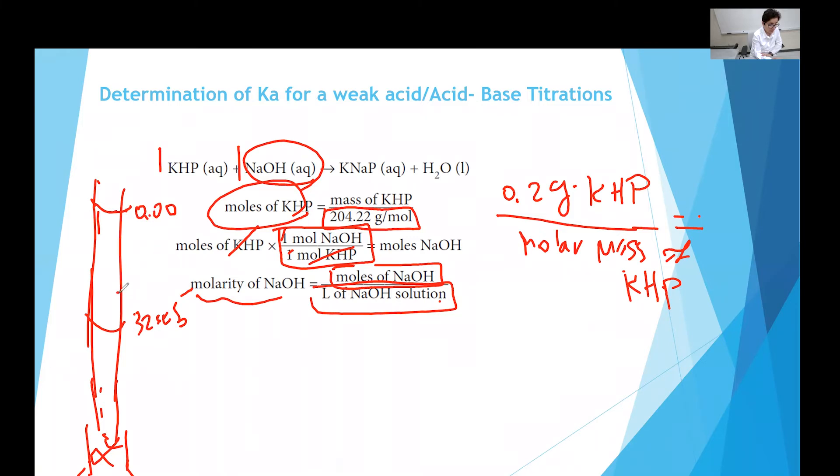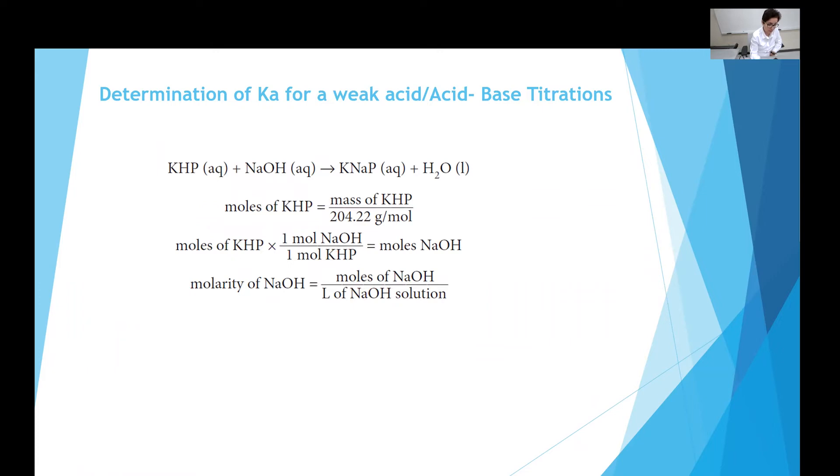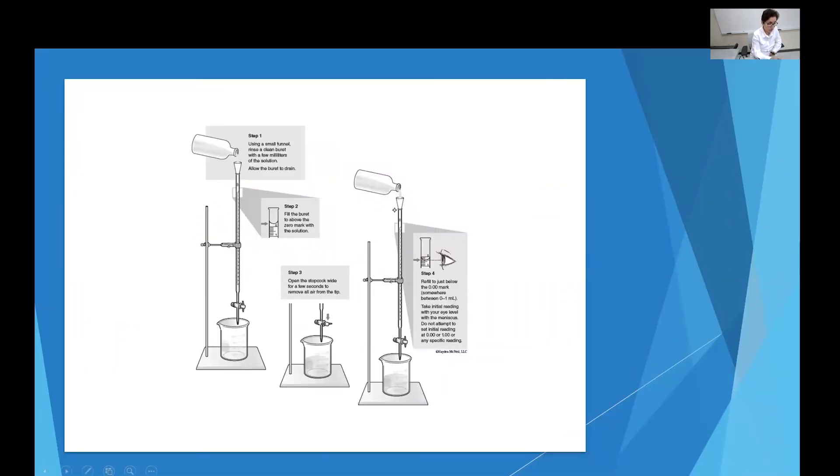Final minus initial is going to give you the volume of sodium hydroxide in milliliters. Then you multiply that by one liter over 1000 milliliters. That gives you the volume in liters. That's what you need. Volume of sodium hydroxide solution used in the titration of KHP has to be in liters. So that gives you the molarity of sodium hydroxide. When we have the molarity of sodium hydroxide, we are going to move to second part of the experiment.